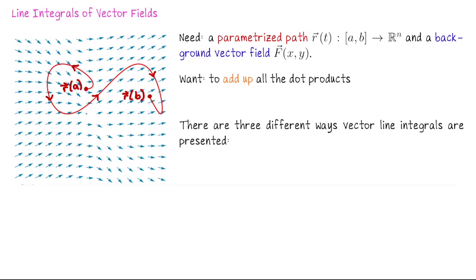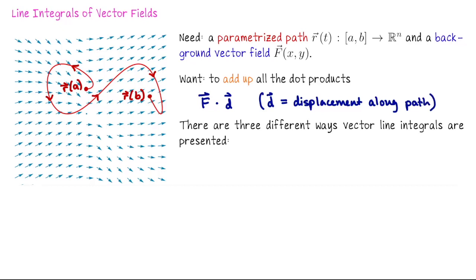We can think of the vector field like an electromagnetic field. The motivation here is to compute the work the vector field does moving an object along this path. What we'd ultimately like to sum up is a bunch of calculations that look like force dot displacement, where displacement means displacement as we travel along this path. Since the path is bending, this isn't going to be just one dot product — we need to estimate the work done along the curve by computing F dot d along it.